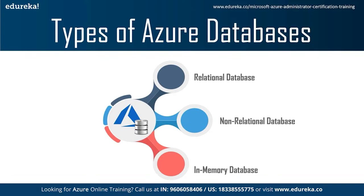Second, we have non-relational databases, also known as NoSQL databases. NoSQL databases provide a mechanism for storage and retrieval of data modeled in means other than the tabular relations used in relational databases. They are increasingly used in big data and real-time web applications, and are sometimes called 'not only SQL' to emphasize they may support SQL-like query languages. The prominent non-relational database provided by Azure is Cosmos DB.